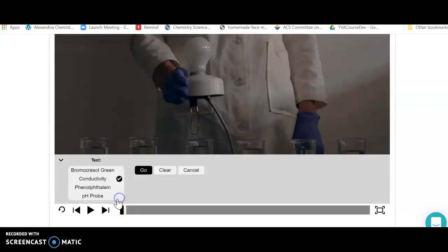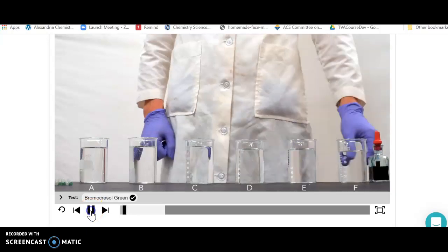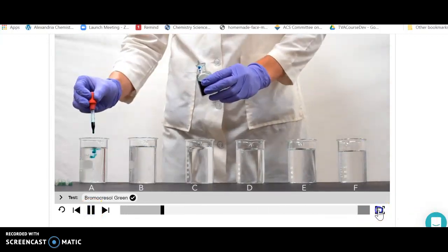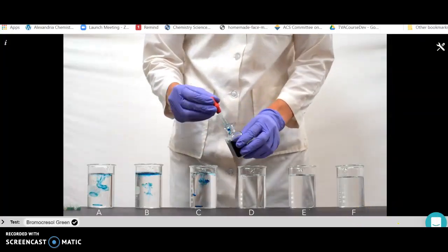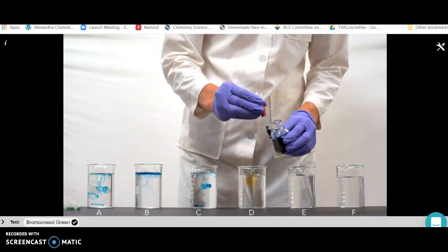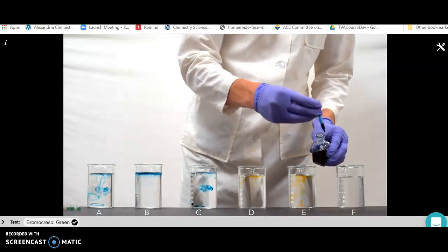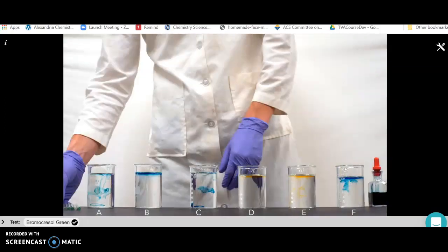What you're going to do is select which test you want to do. For example, I'm going to pick bromocresol green and press go here, and then play. Remember, all of these work a little better if you expand the screen. What they're going to do is put some of the indicator into the solutions.